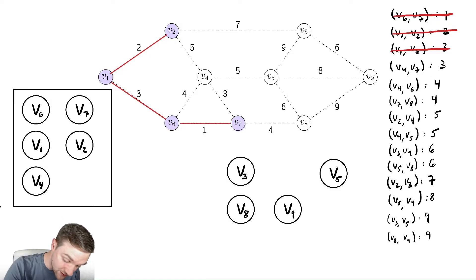And then we add v4, v7 to the graph. So then we color this edge here, and then we remove that from the list.